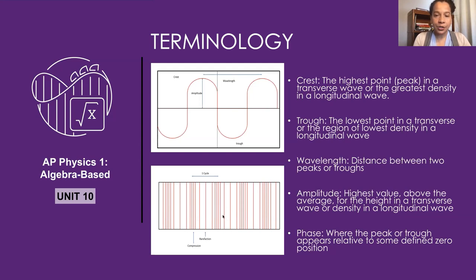For longitudinal waves, recall that these waves involve mediums where the material is bunched up in some regions, leaving the material stretched or rarefied in other regions. In these waves, we have a rarefaction region where the material is less dense, and a compression region where the material gets more dense. The wavelength or cycle length is given by the distance from one compression to the next, or from one rarefaction to the next.